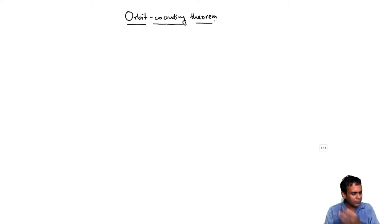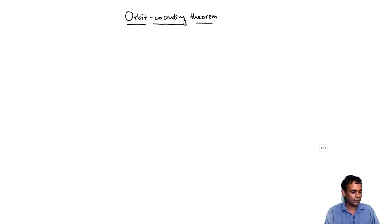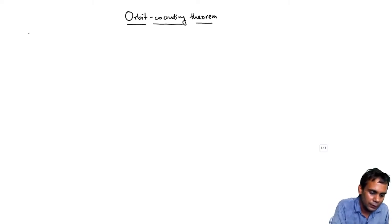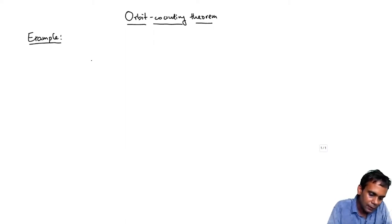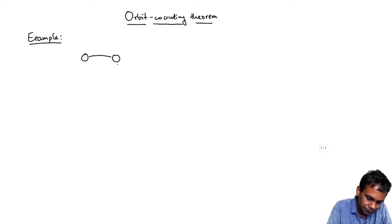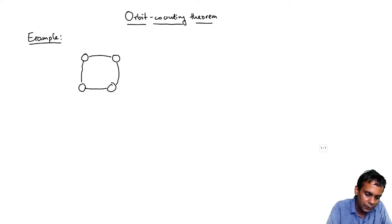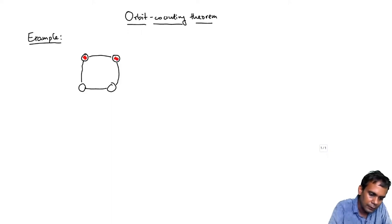The common way to motivate this is to use the necklace problem. Here is an example of the necklace problem. I have a necklace with four beads, and I can color these beads — some of them red and some of them blue.